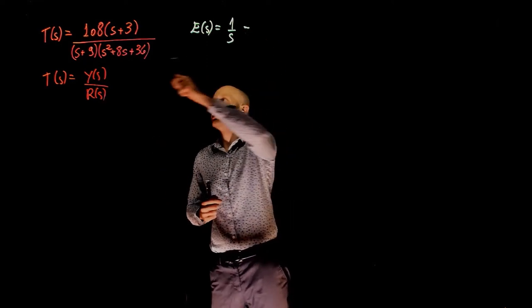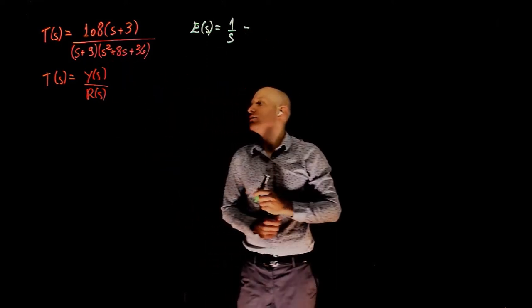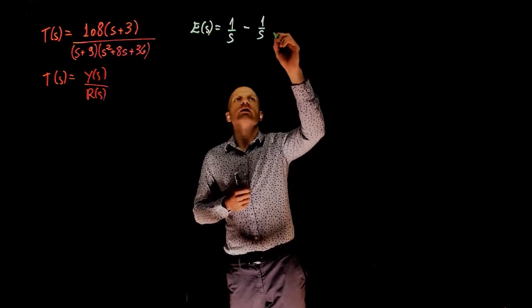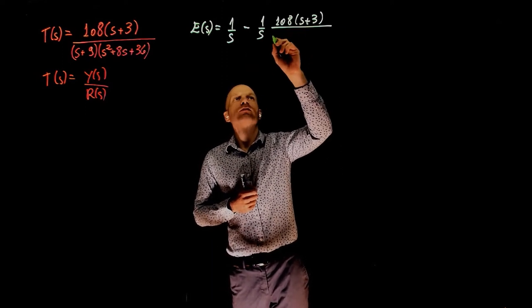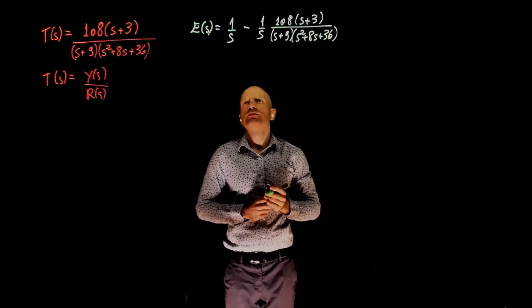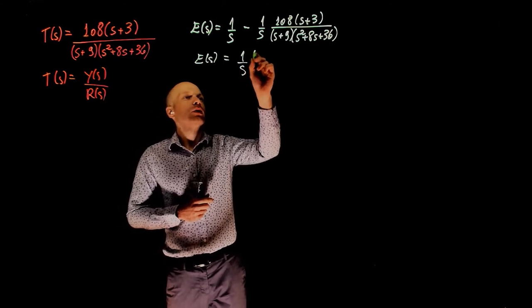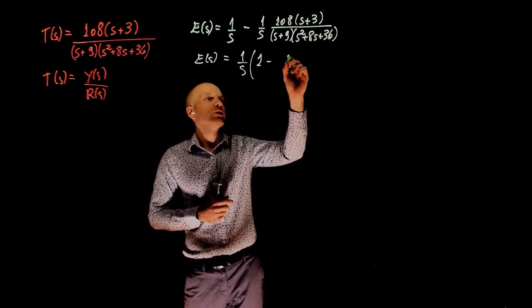Minus the actual output, that is T times r, which is 1 over s times T of s. We can now factor 1 over s, and you are left with 1 minus that function.